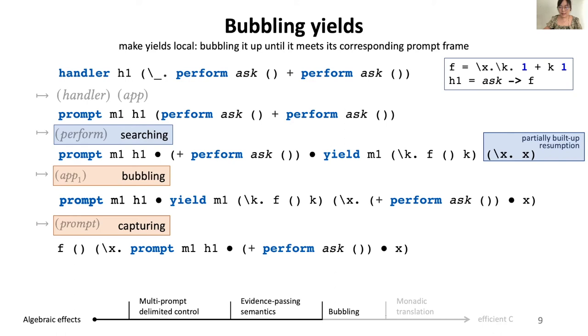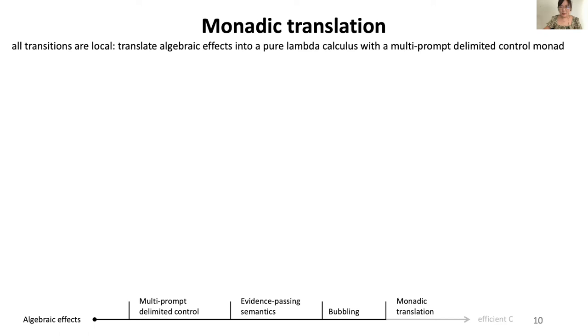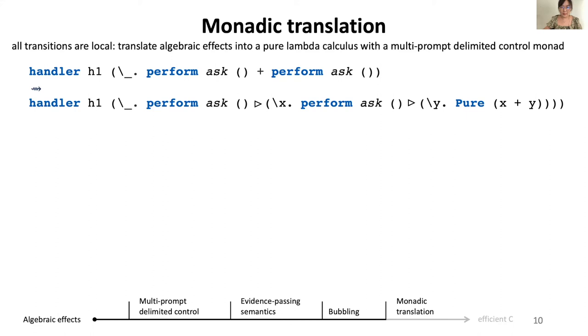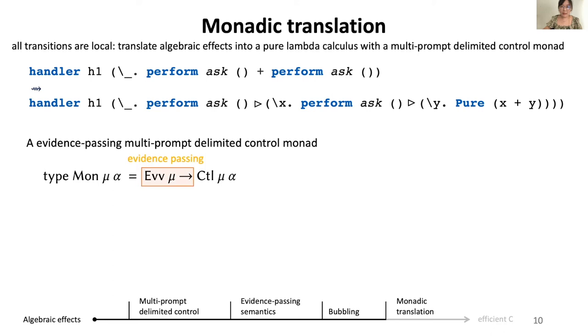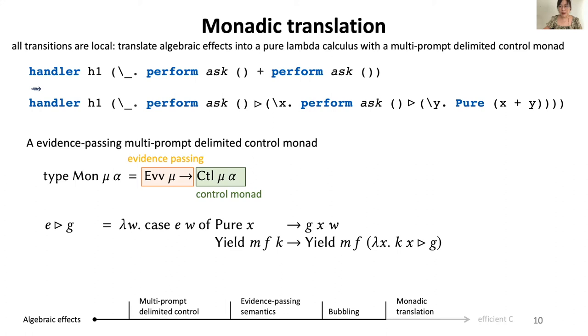With monadic translation, our running example will be translated into a monadic expression as this. The monad we are using is also regular. It is essentially a reader monad for the current evidence vector composed with a control monad. The definition of control monad can be better understood via the monadic binding of Mon. If we bind E with G, we will first evaluate E. If E results in a pure result, then we can pass the result and the current evidence vector to G. Otherwise, if E performs an operation and thus generates a yield, we will bubble this yield and add G to the partially built-up resumption. You can see all ingredients of transitions in this definition. We have evidence-passing, multi-prompt delimited control, and bubbling.